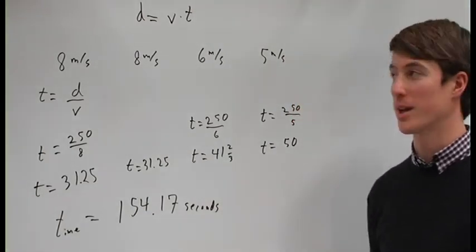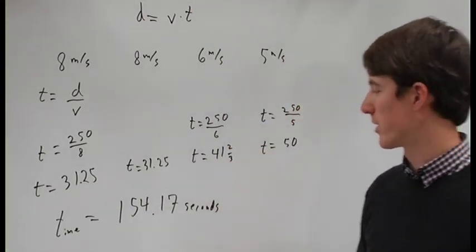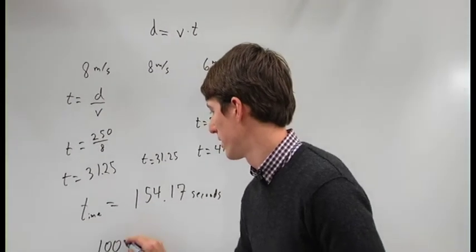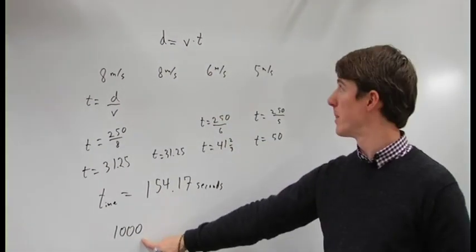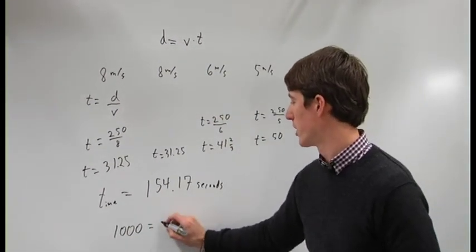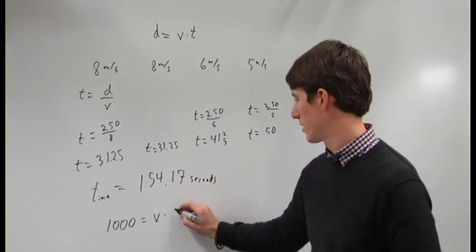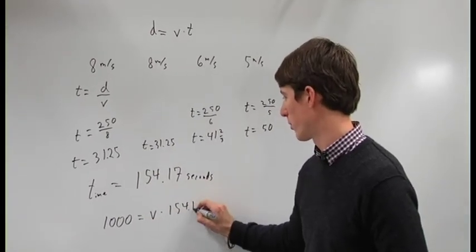Now we need to find the average speed, so we take the total distance, 1,000 meters, set that equal to velocity times the total time, 154.17.